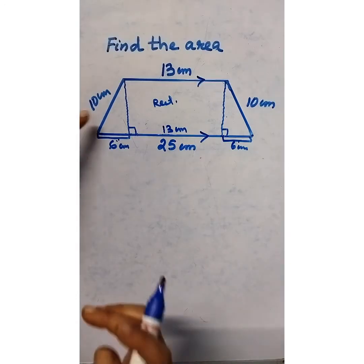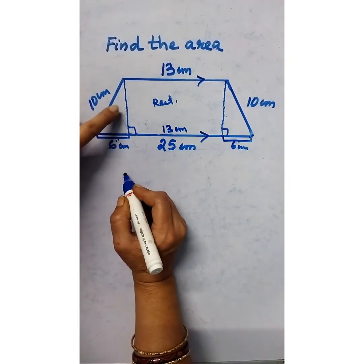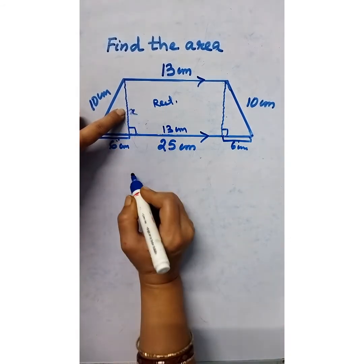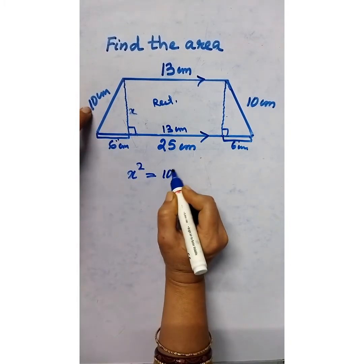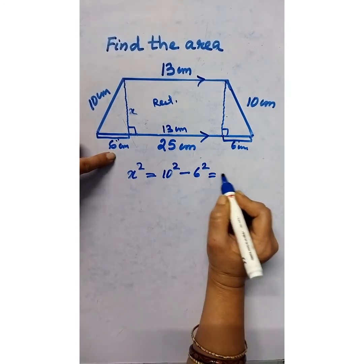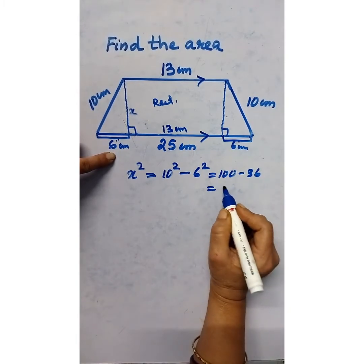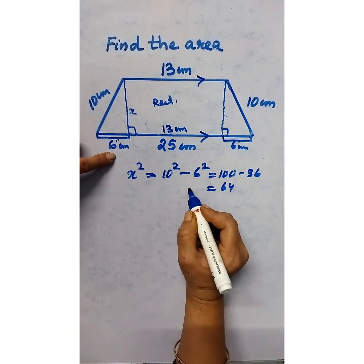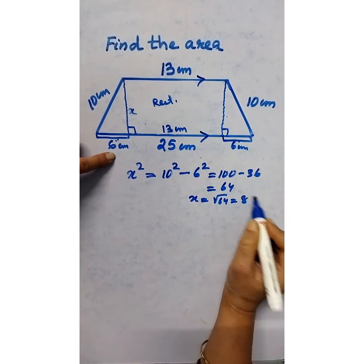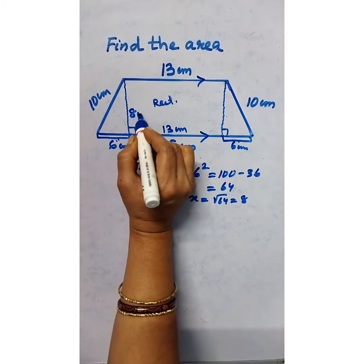Now with one right angle triangle, we have to find the third side — the height — using the Pythagorean property. Let this side equal x. Then x² = 10² − 6² = 100 − 36 = 64. Therefore x = √64 = 8 centimeters.